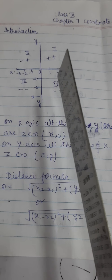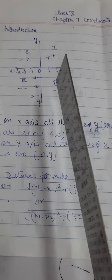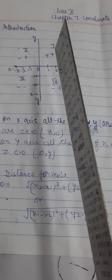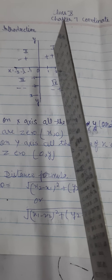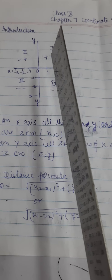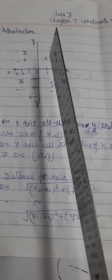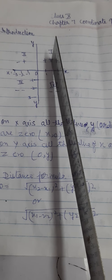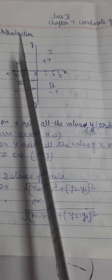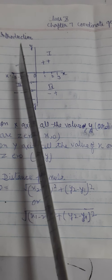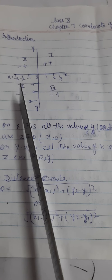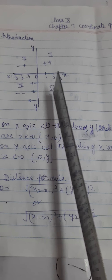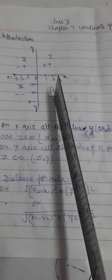As you have studied in 9th class, there are 4 quadrants and we see the quadrants anticlockwise. First quadrant is positive positive, second quadrant is negative positive, third quadrant is purely negative, and fourth quadrant is positive negative.